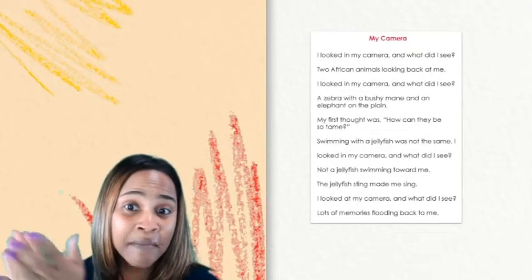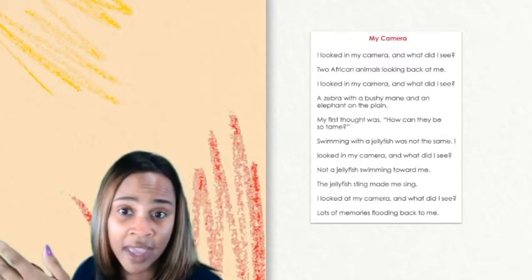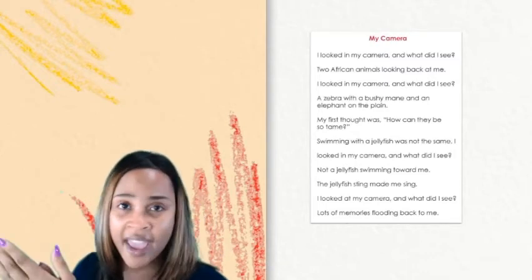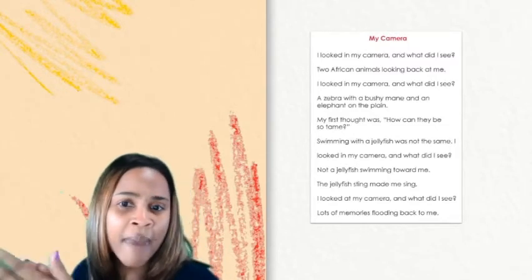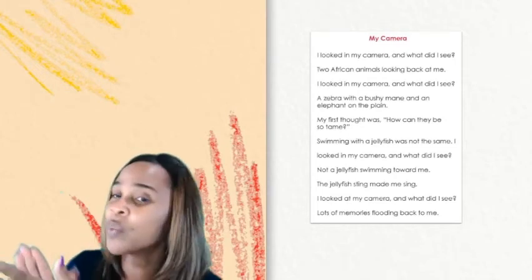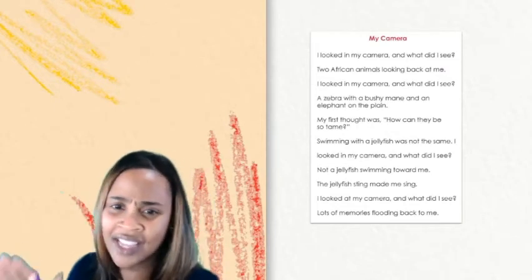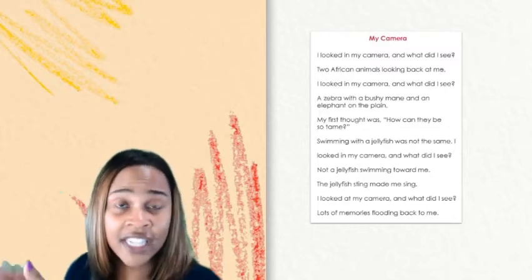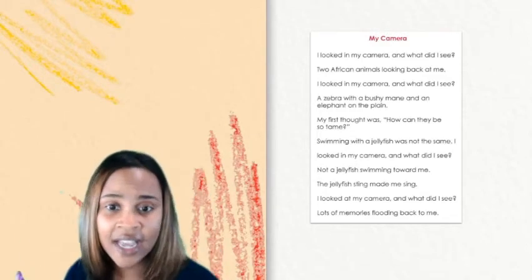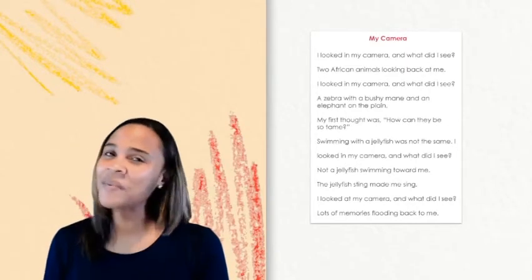I looked in my camera and what did I see? Two African animals looking back at me. I looked in my camera and what did I see? A zebra with a bushy mane and an elephant on the plane. My first thought was, how can they be so tame? Swimming with a jellyfish was not the same. I looked in my camera and what did I see? Not a jellyfish swimming toward me. The jellyfish sting made me sing. I looked at my camera and what did I see? Lots of memories flooding back to me. Wow. So much rhythm and so many beats in our poem.